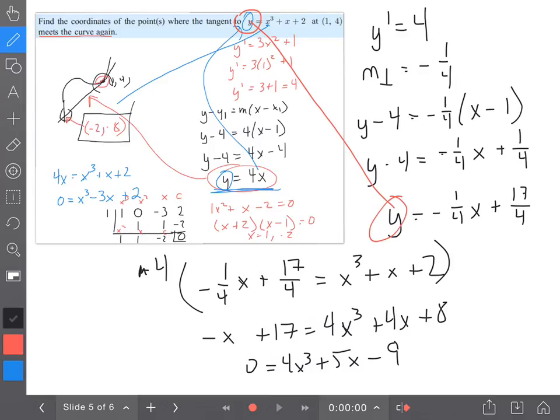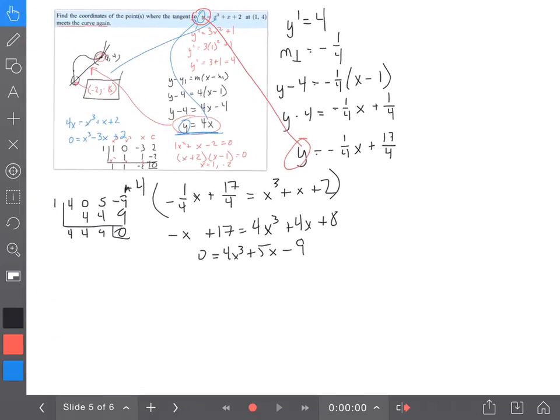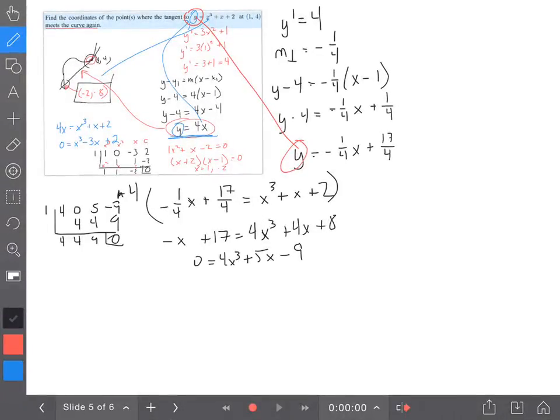We just need to show that it is going to intersect at one, so I'm going to do my synthetic division. I got the 4 for the x³, I got a 0 for the x², a 5 for the x, and then -9. If I put in 1: bring down the 4, 1×4 is 4, 0+4 is 4, 1×4 is 4, 5+4 is 9, 1×9 is 9, and I got a remainder of 0.